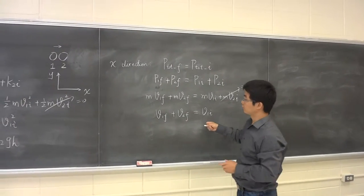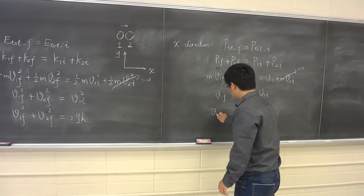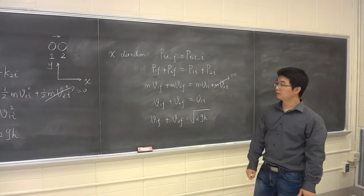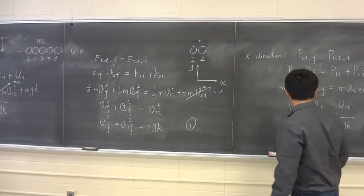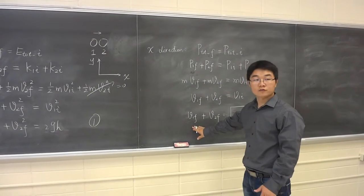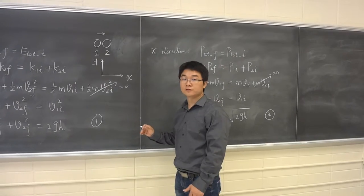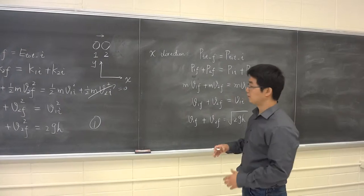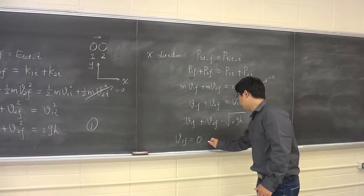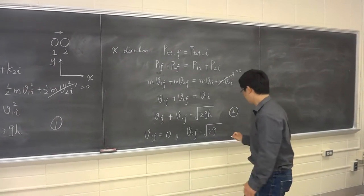So now we can see that we have two equations from the conservation of energy and momentum, and we also have two unknowns: V₁F and V₂F. Mathematically we can always solve for these two unknowns using two equations. I'm not going to solve it here because it's just algebra, and I'm just going to write down the solution: V₁F equals zero, and V₂F equals the square root of 2gH.